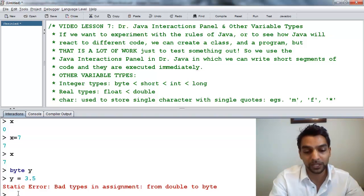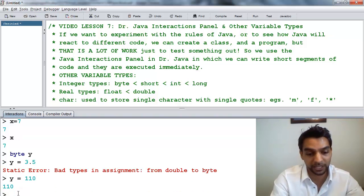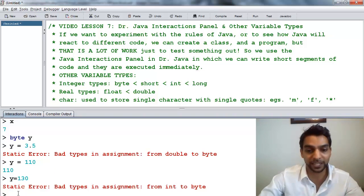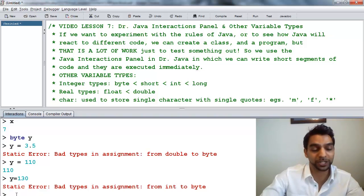Now, what are the differences? Let's say y equals 110. Oh, that's okay. Let's say y equals 130. I'm not allowed to do that. It's saying from int to byte. 130 is actually too large for a byte. It's too big to be stored in a byte.